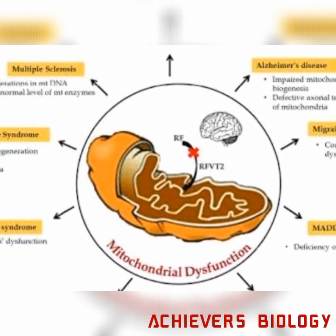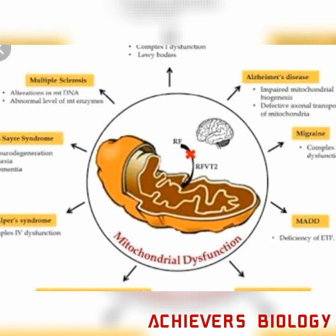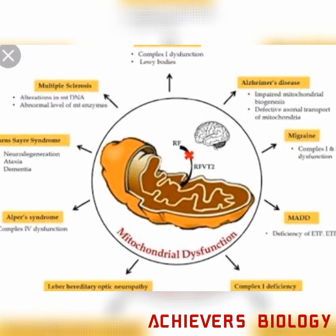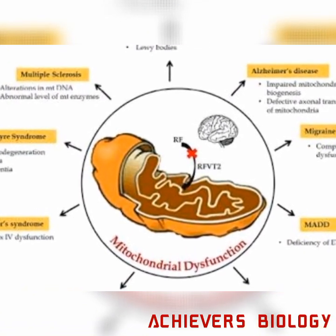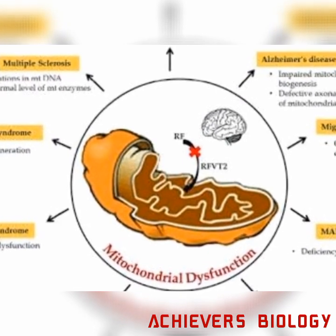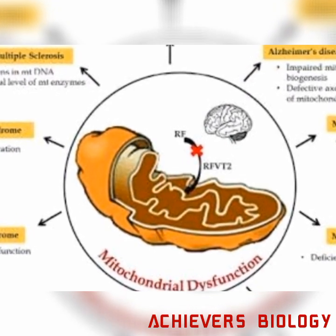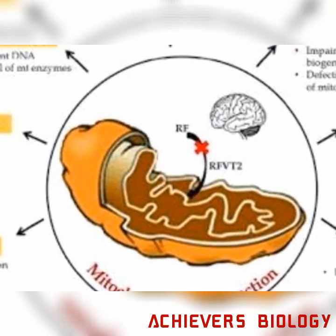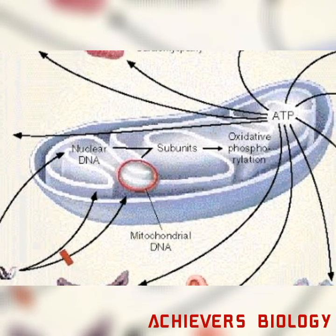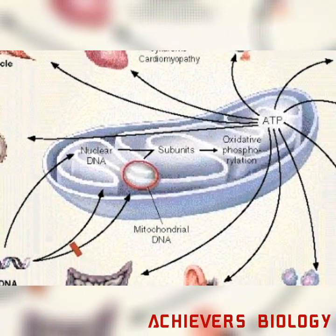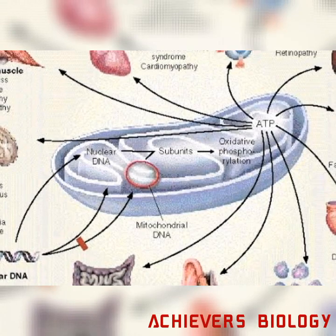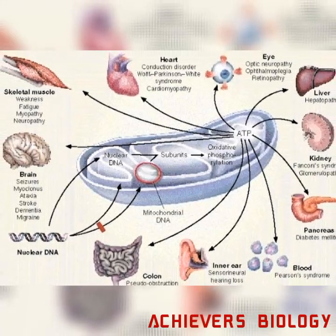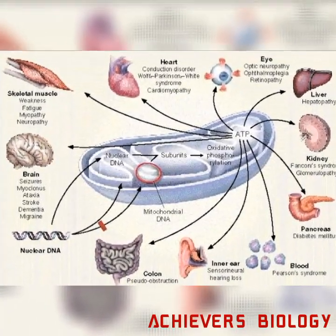In some cases, chronic fatigue syndrome also occurs. If we consider the two major diseases in mitochondrial abnormalities, those are Chronic Progressive External Ophthalmoplegia, or CPEO, which features external ophthalmoplegia and bilateral ptosis and proximal myopathy.